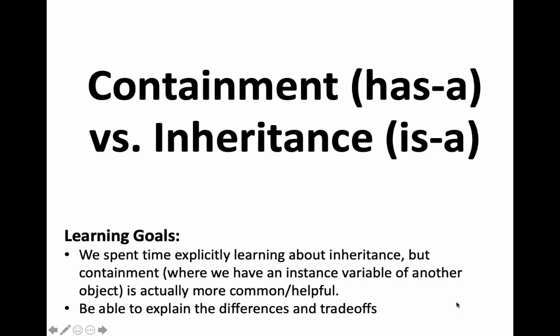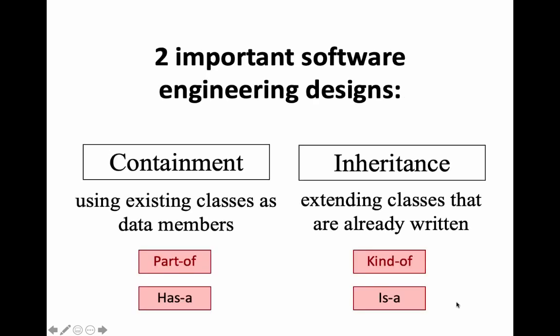In CS60 we've learned about inheritance — that's where something is a something else, like a dog is an animal. But even just the idea of having instance variables, this idea of containment, is super helpful. That's where something has something, like a person has a string representing their name. Containment is actually the most powerful tool we've learned, and the applicability of inheritance is less broad than the applicability of containment.